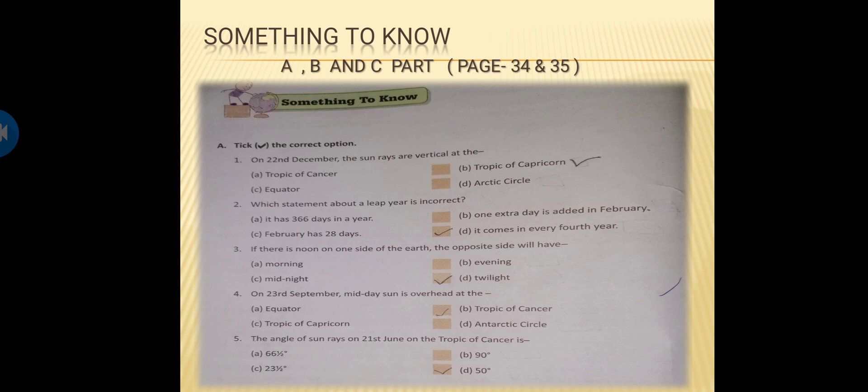Now come to question number 3. If there is noon on one side of the earth, the opposite side will have what? So option A is morning, no. Option B, evening, no. Option C, midnight, yes. And option D, twilight, no. So what is the correct answer? Option C is the correct answer.